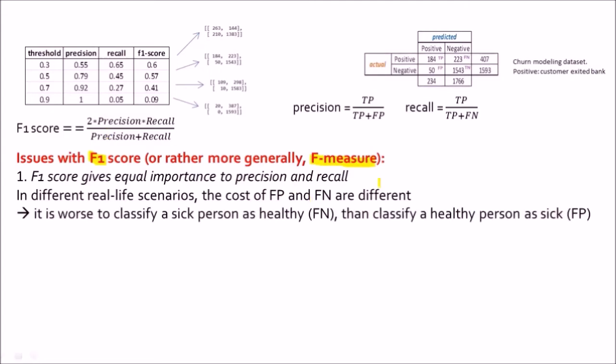For example, it is worse to classify a sick person as healthy which is a false negative case than classify a healthy person as sick which is a false positive case. Because if you classify a sick person as healthy, then they would not get any further treatment done or they wouldn't take any further medications and that would be bad for their health. So that is a very bad scenario and that is a very bad classifier and if you look at the formula false negatives is with the recall and hence if we have a very high number of false negatives that would mean we have a very low recall. And having a low recall would straight away tell us that the classifier is not doing a good job.